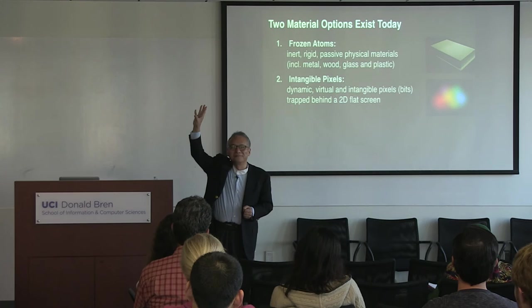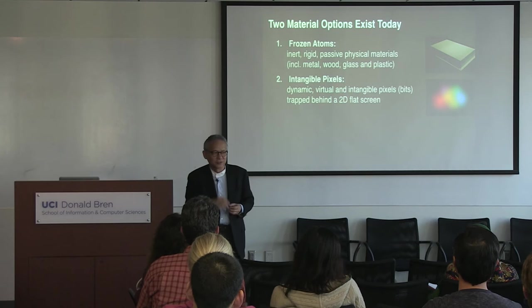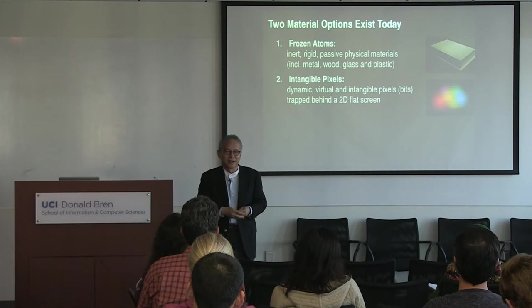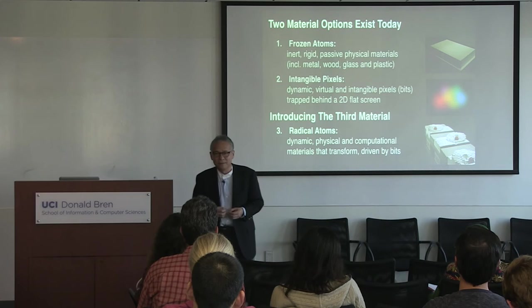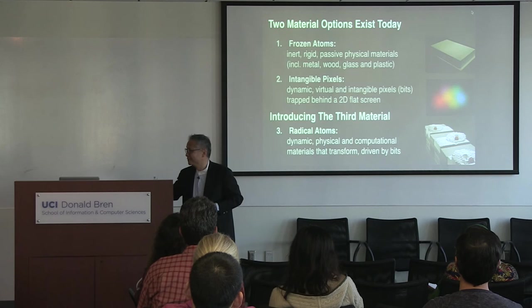As designers and artists, you have two material options: frozen atoms — wood, glass — with no computational consciousness; or computational but completely intangible pixels stuck behind a 2D screen. My dream is to make a new kind of material that is fully physical, dynamic, but also computational. That's what we call radical atoms. The three capabilities are: transformable, conformable, and informable.